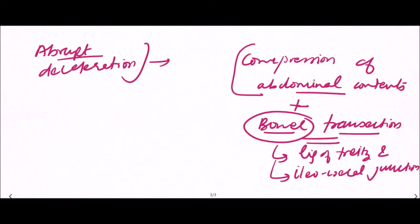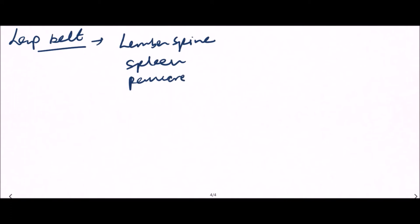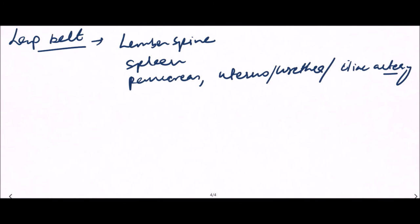Compression of abdominal contents may also cause rupture of viscera or other structures in the abdominal cavity. The lap strap is responsible for various injuries to the lumbar spine, rupture of the spleen, injuries to the pancreas, urogenital organs such as the uterus, rupture of the urethra, and injury to large vessels like the iliac arteries and aorta.